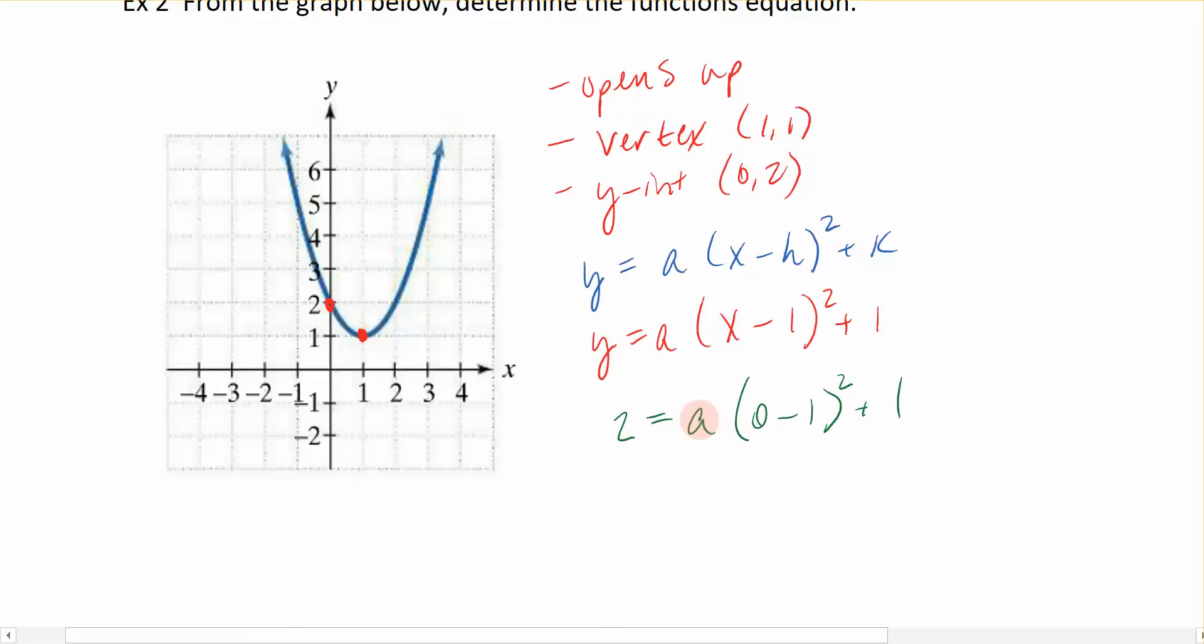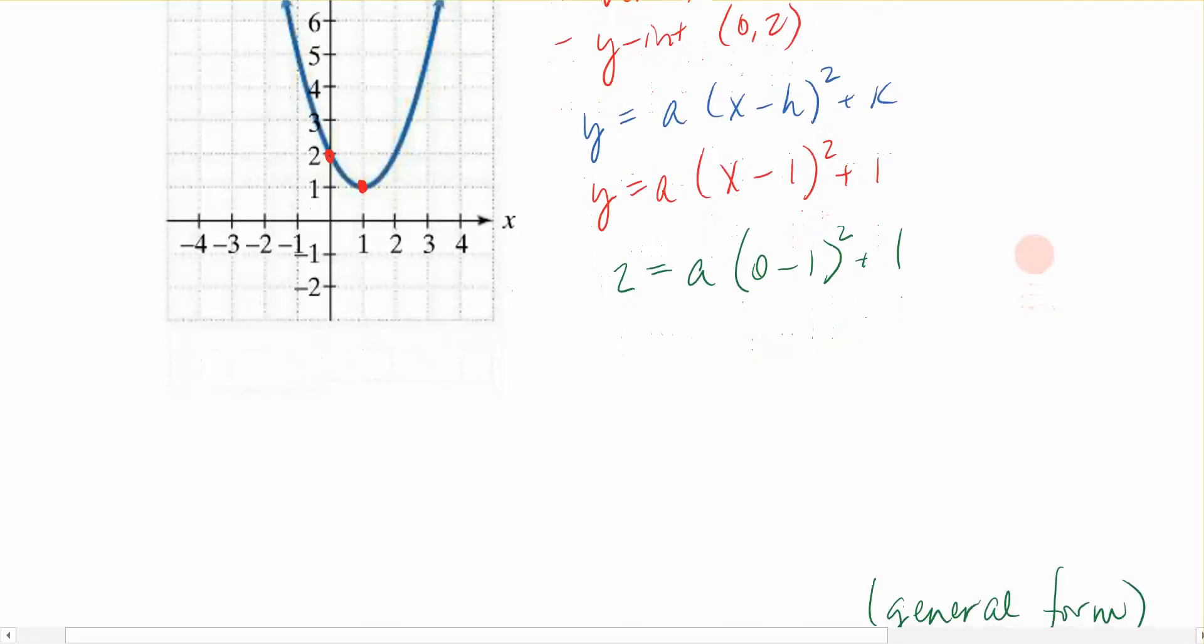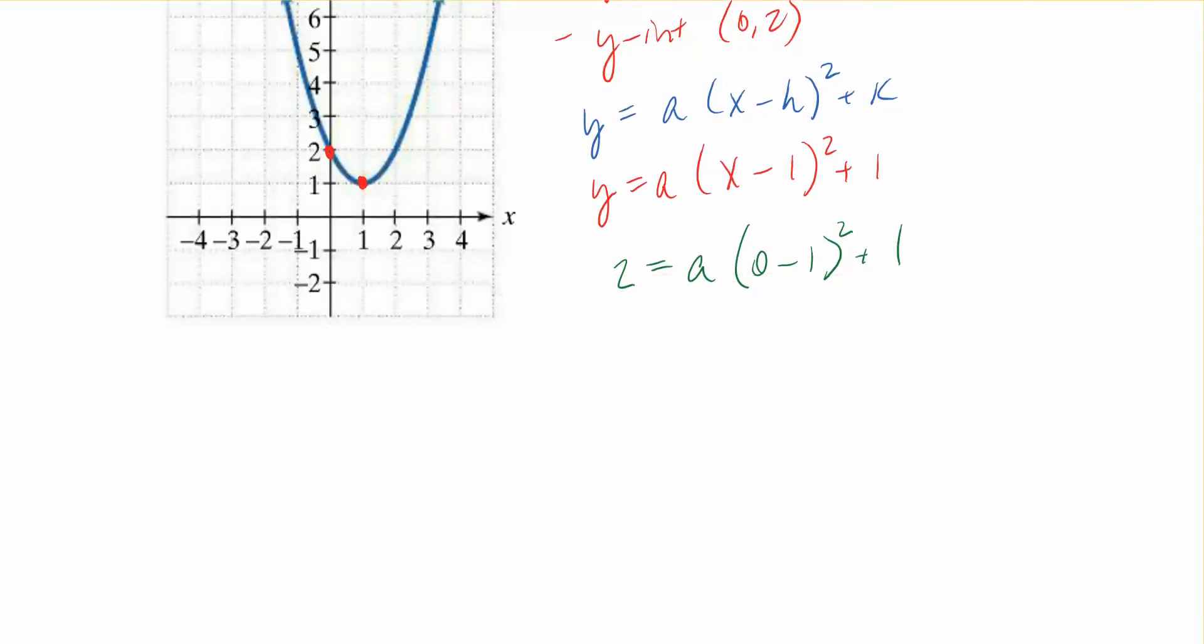Now what that did for me is it gave me an equation in one variable that I can now solve for that letter a. So we are going to simplify this and we get negative 1 squared. So 2 equals, negative 1 squared would just be 1. So I have 1a plus 1. And if I subtract 1 to the left hand side over here, I have 1 is equal to just a. So I know that the coefficient, the leading coefficient on the equation that I'm creating is now a positive 1.